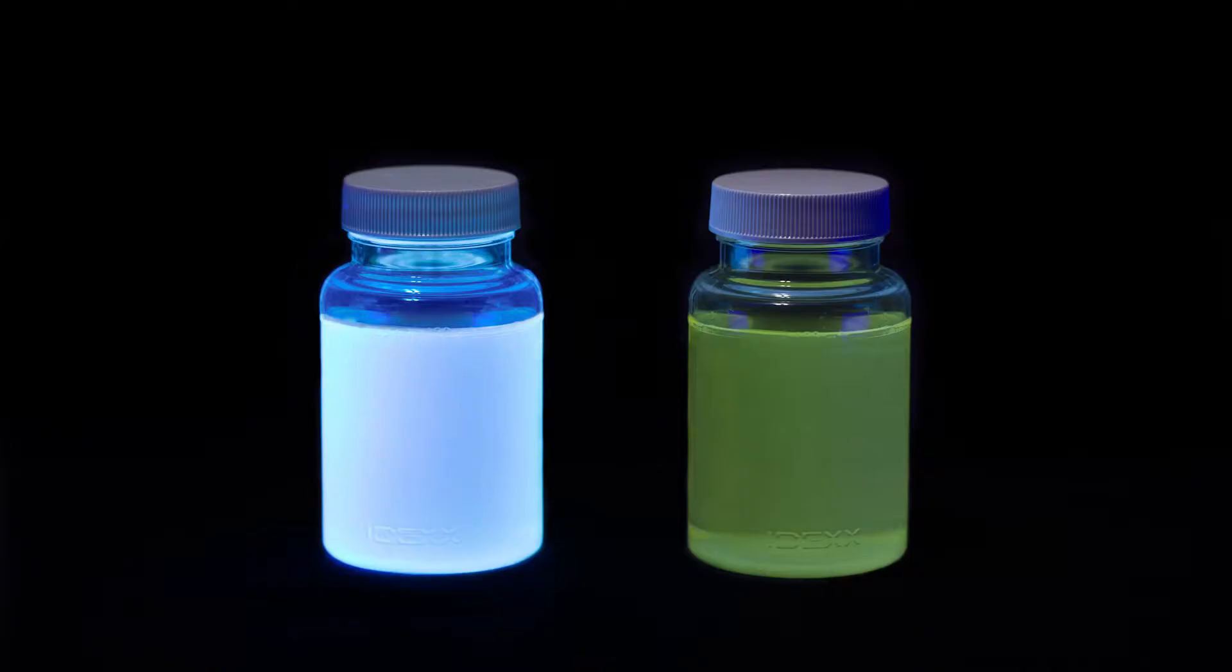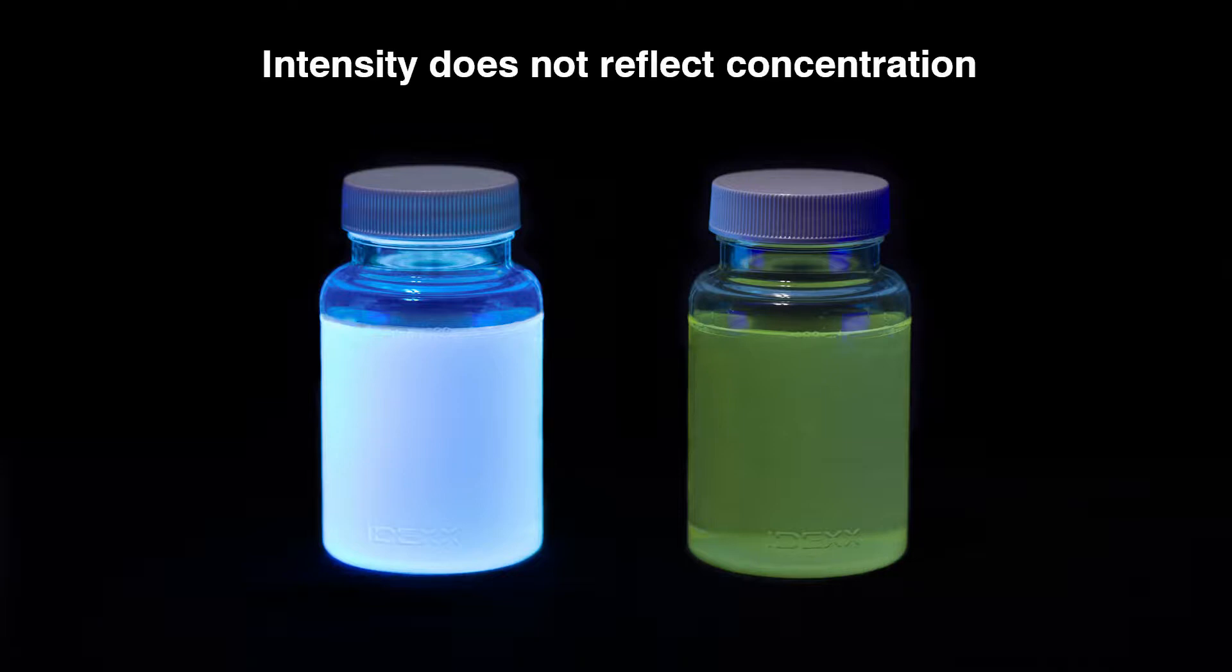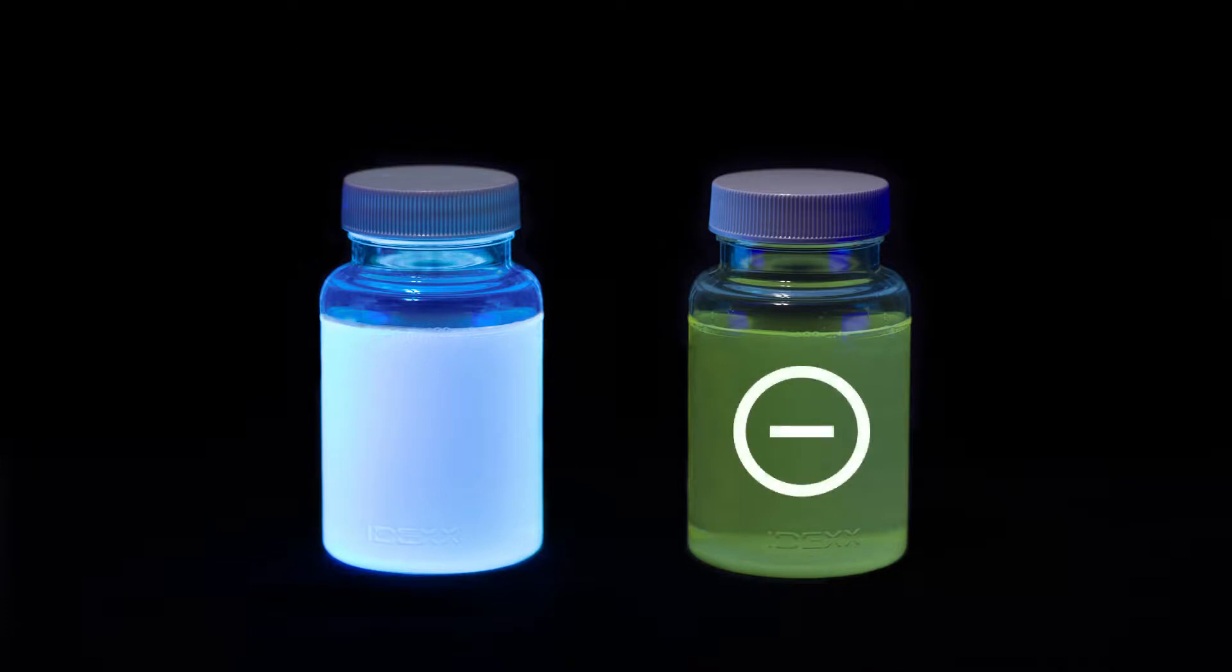After incubation, view the sample under UV light in a dark environment. Shine the light away from your eyes. Keep the light within 5 inches of the sample. Any blue fluorescence means a confirmed positive for enterococci. The intensity of the fluorescence does not reflect sample concentration. In this example, the right sample is negative and the left is positive.